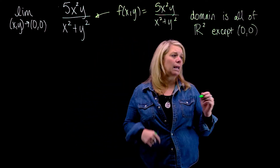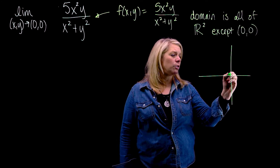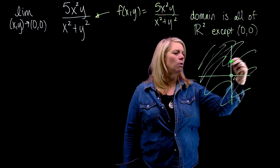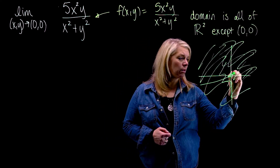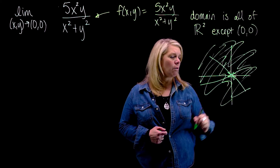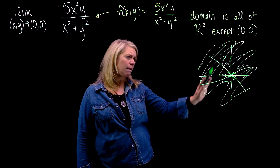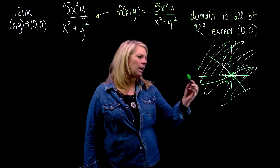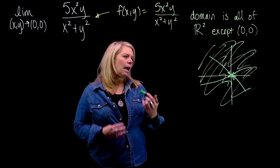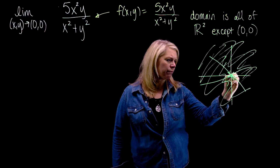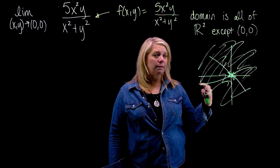We need a different strategy. One helpful approach is to think about what this limit is really asking. I'll draw a picture of the domain — all of R² except the origin — and think about what happens when I take any path of approach toward the origin. This picture suggests that we don't have to be restricted to just using x's and y's. Since we're approaching the origin, a different coordinate system might be helpful.